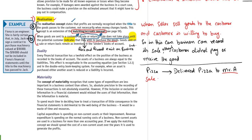The eighth concept is duality. The duality concept states that every business transaction has a dual effect — a debit impact and a credit effect. This is the basis of the double-entry bookkeeping system.